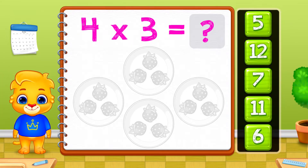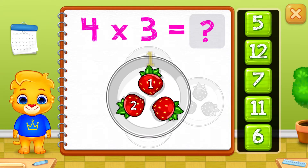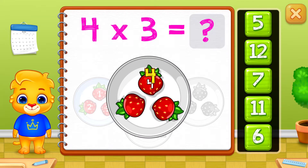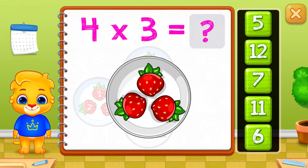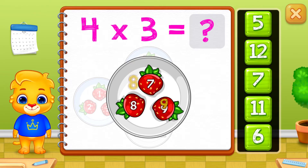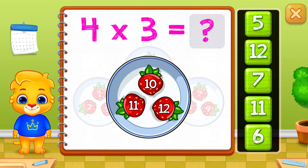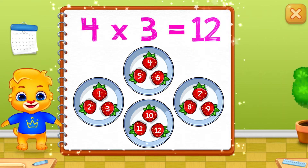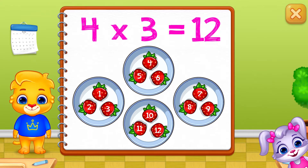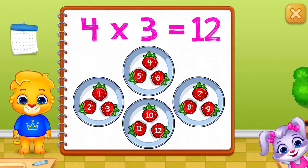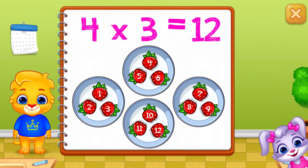Let's learn to multiply using groups. 1, 2, 3, 4, 5, 6, 7, 8, 9, 10, 11, 12. When you multiply, you are adding numbers in groups. 4 times 3 equals 12.